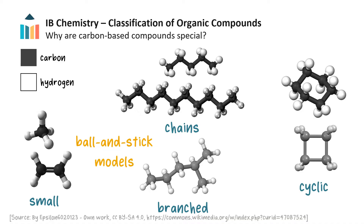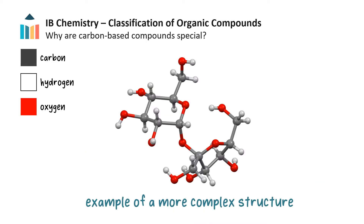These structures are drawn with balls to represent atoms, and lines or sticks to represent bonds, and these are called ball-and-stick models. Here is a ball-and-stick model of a more complex organic structure containing chains, ring structures, and even oxygen atoms, which are shown in red. This molecule is sucrose, or table sugar.